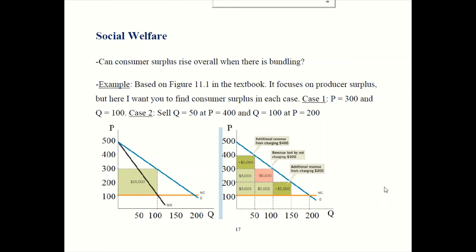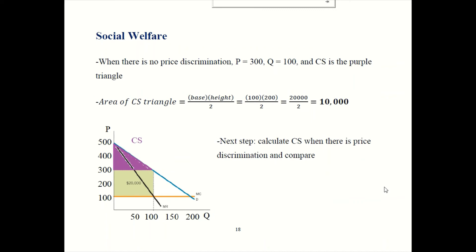Alright, let's look at the answer. In case one — no price discrimination — everybody pays $300. You find consumer surplus by finding the area below the demand curve and above the price of $300, giving the purple triangle. The area is base times height over 2: the base is 100, the height is 200 (the gap between $500 and $300), so we get 100 × 200 / 2 = $10,000. That's consumer surplus when there is no price discrimination.